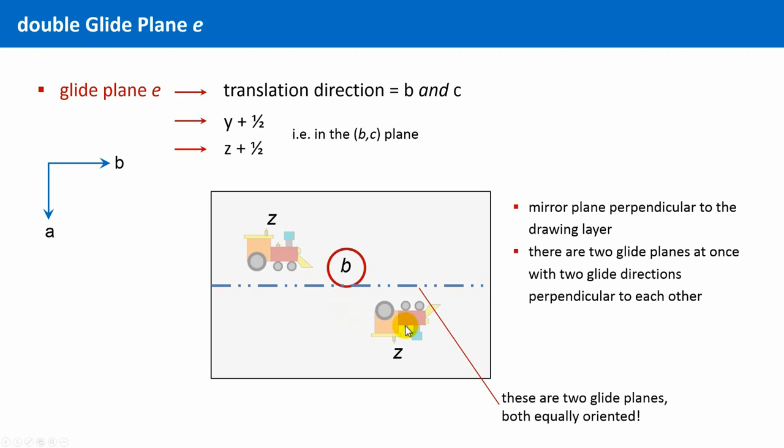Now, we also have the glide plane C. And the mirror component is identical with the mirror component of the glide plane B. Mirroring and then translation, but now in the positive direction of C, because it's a glide plane C. So, this transforms this locomotive into that one. But we also have to carry out this symmetry operation with that locomotive. Mirroring and then again translation along the positive C direction. And now, we see that the two locomotives which are located above the drawing layer at height Z plus one half are, of course, also symmetry related to each other, namely as these two below the drawing layer, by the glide plane B.